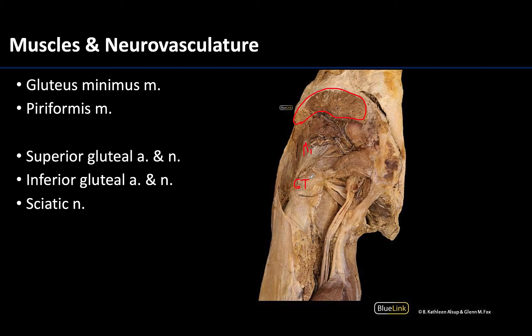Before getting to the neurovasculature, I want to re-point out this very important muscle — the piriformis. It is a triangular-shaped muscle with its proximal attachment within the pelvis; it attaches on the sacrum, traverses the greater sciatic foramen, and distally attaches on the greater trochanter.